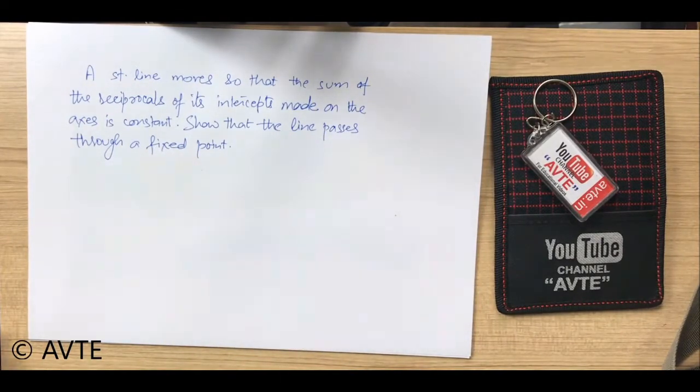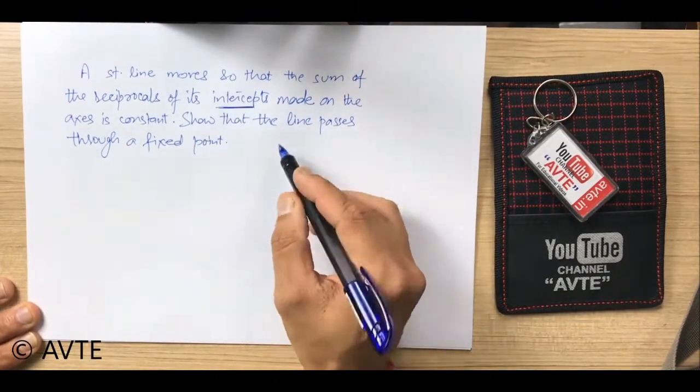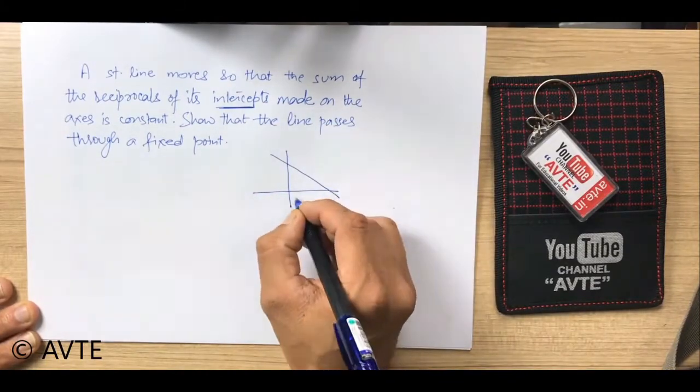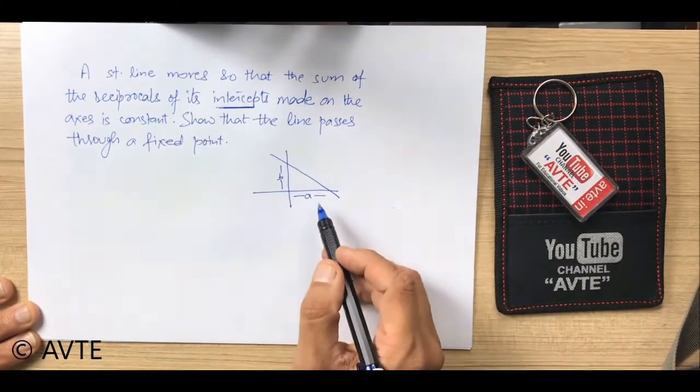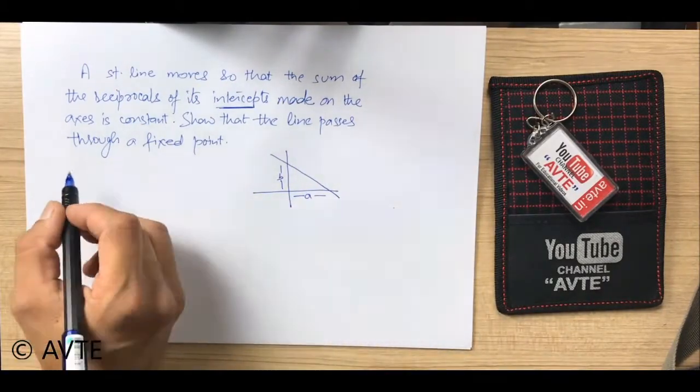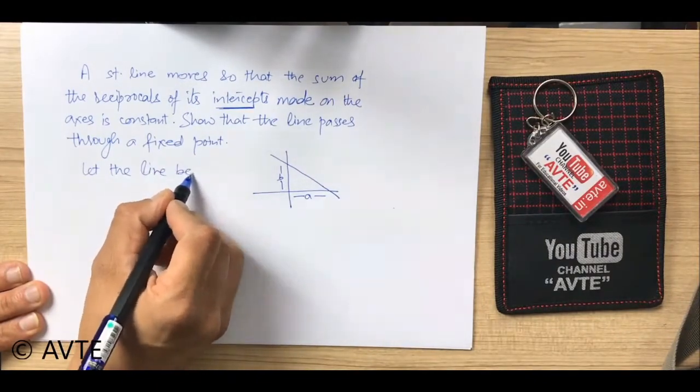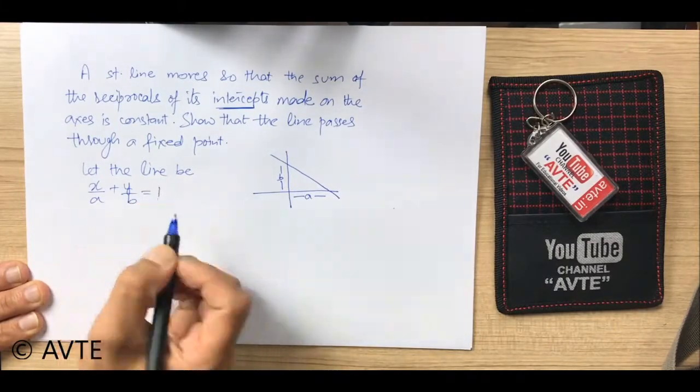As soon as they're saying that intercepts, the first thing that comes to mind is that the line will be something like this where a and b are the intercepts respectively on the x-axis and y-axis. So you will write, let the line be x/a + y/b = 1.